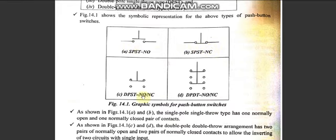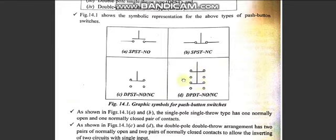Double Pole Single Throw allows switching from one pole to another. Here one pole is normally open and the other is normally closed — pressing the button connects the other circuit. Double Pole Double Throw has two poles and two throws, allowing two electrical circuits to be connected simultaneously at the momentary press.